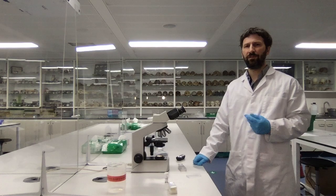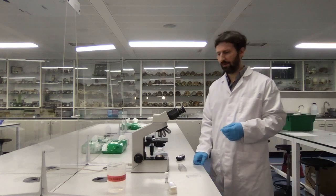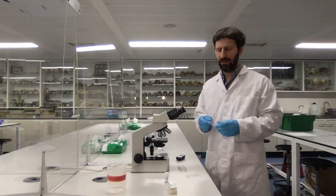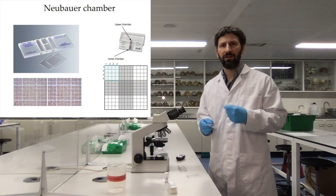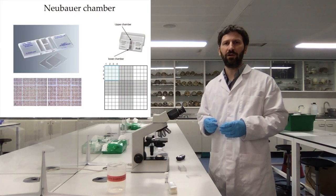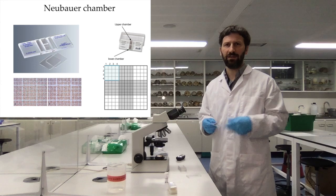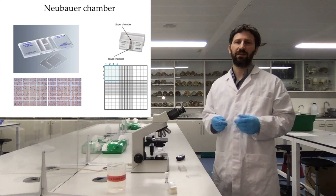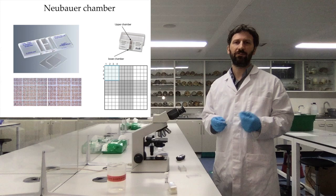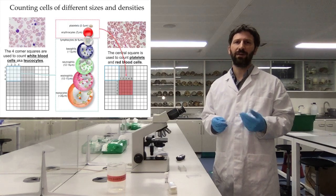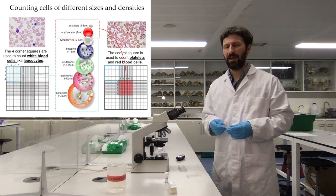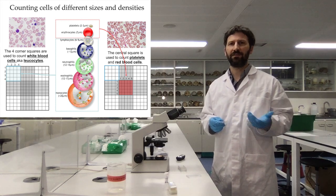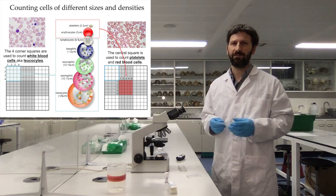In this practical, we learn to use the hemocytometer, which is this modified microscope slide that has a small grid containing a known volume of suspension and can be used for counting cells. It happens quite often in a lab that we need to count cells — it could be blood cells, for instance, and the name hemocytometer actually refers to blood cells because hemo means blood.